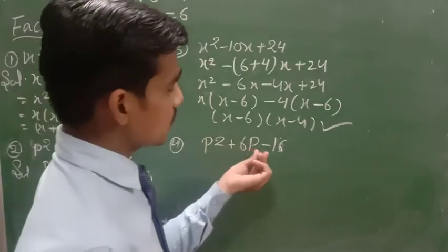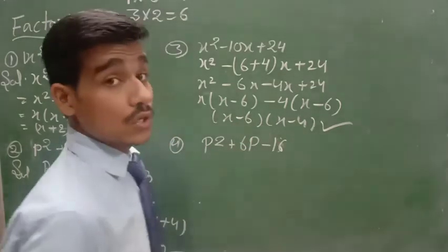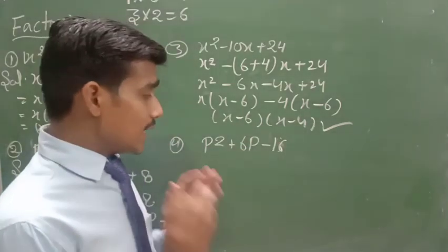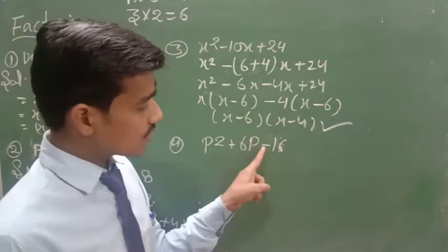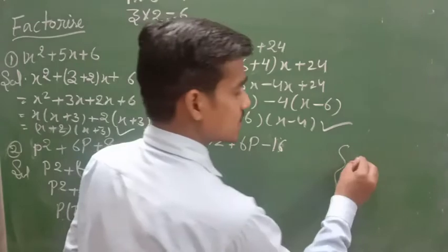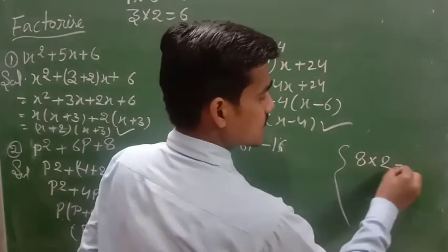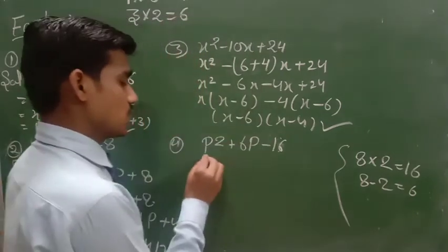Here, p² + 6p - 16. You can see here minus. So we need a table where if we multiply we get 16, and if we subtract we get 6. 8 and 2 gives 16. And 8 minus 2 is equal to 6.